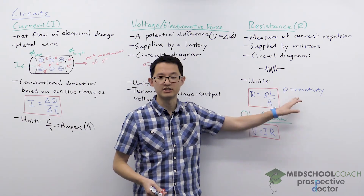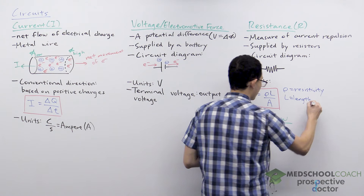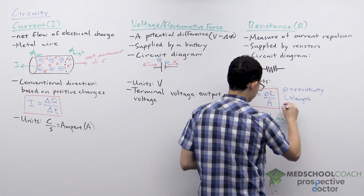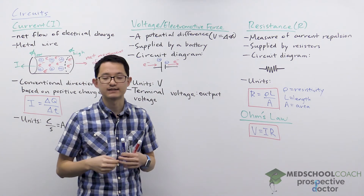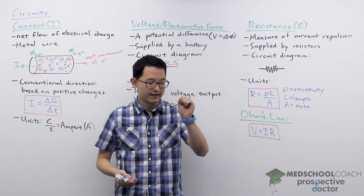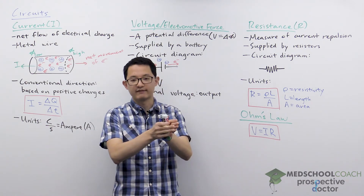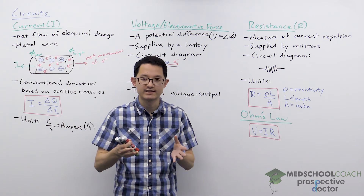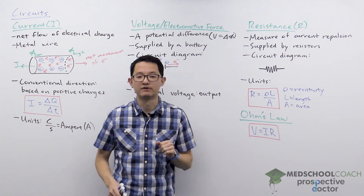L is the length of the resistor — the longer the resistor, the longer the path electrons have to fight through, increasing resistance. A is the cross-sectional area of the resistor. Increasing the area actually decreases the resistance. Consider an infinitely thin resistor where electrons have to go single file; but if you increase the cross-sectional area, you open up more paths for electrons to flow through the resistor, lowering the resistance.